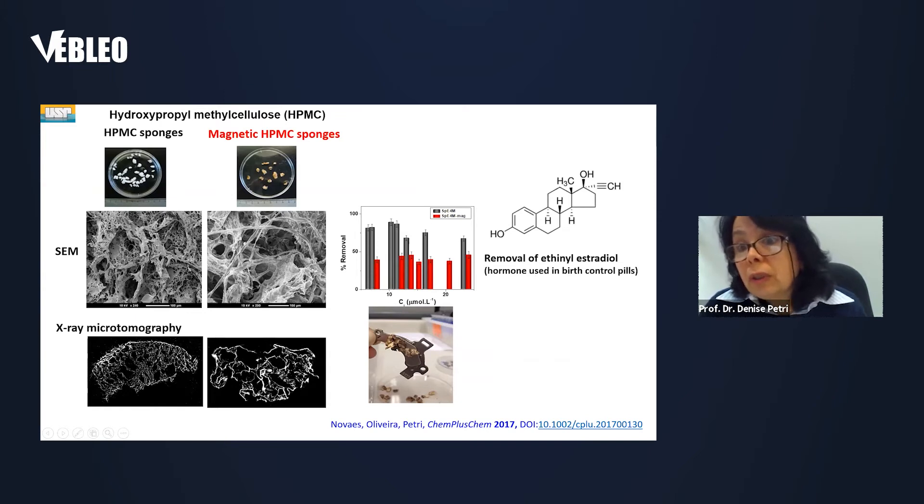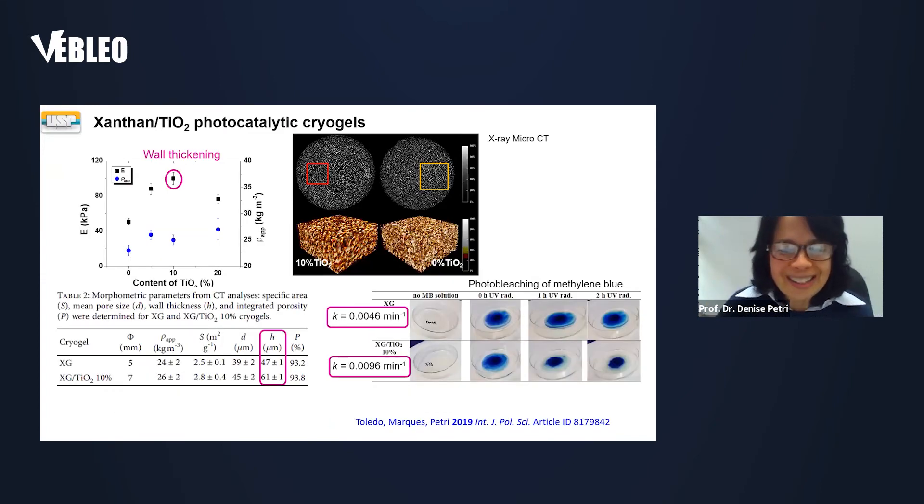Because it's a hormone used in birth control pills and it's found in many rivers all around the world. We can also produce them magnetic, introducing magnetic particles so that the pores after the modification are collapsed, part of them. So we lose about 50% of the removal capacity in comparison to the non-magnetic sponges. But it's easily removed by approaching a magnet. So there are some considerations when we are modifying the absorbents.